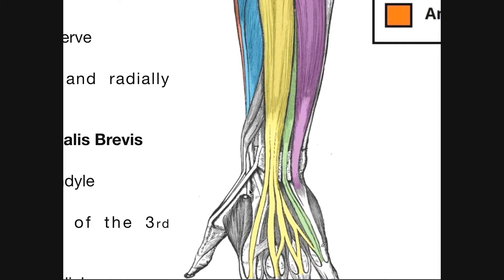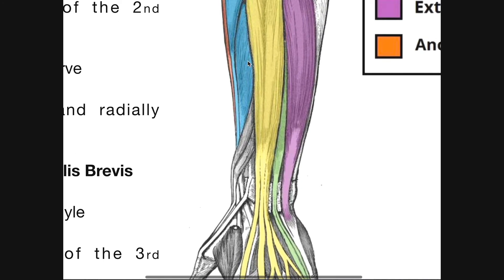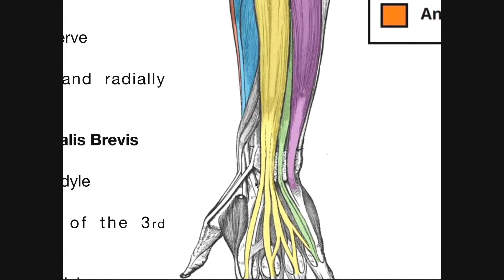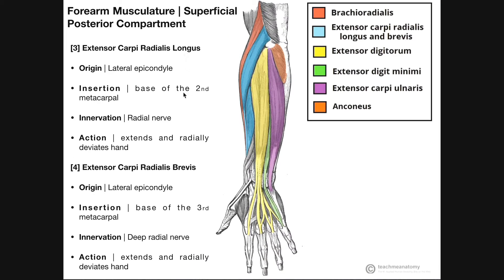Extensor carpi radialis brevis, if we follow its tendon down, is going toward the base of the third metacarpal. So the longus inserts at the base of the second metacarpal, and the brevis inserts at the base of the third metacarpal. Both of these muscles are going to extend the wrist and radially deviate at the wrist. There is also a difference in innervation: extensor carpi radialis longus is innervated by the radial nerve, and extensor carpi radialis brevis is innervated by the deep branch of the radial nerve.